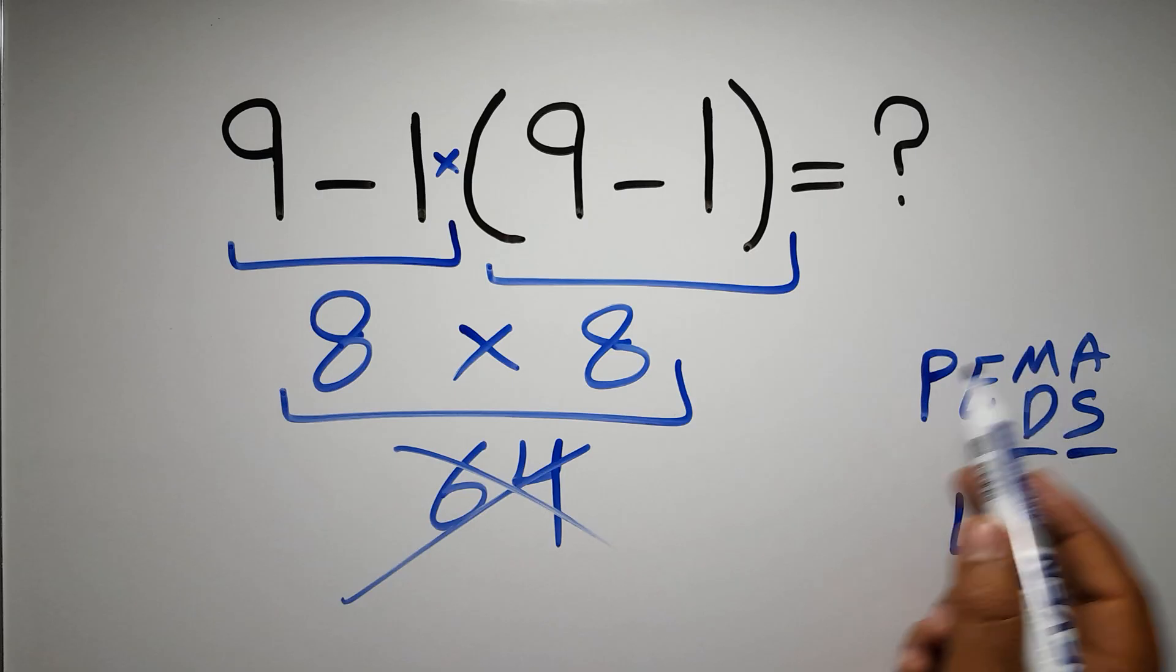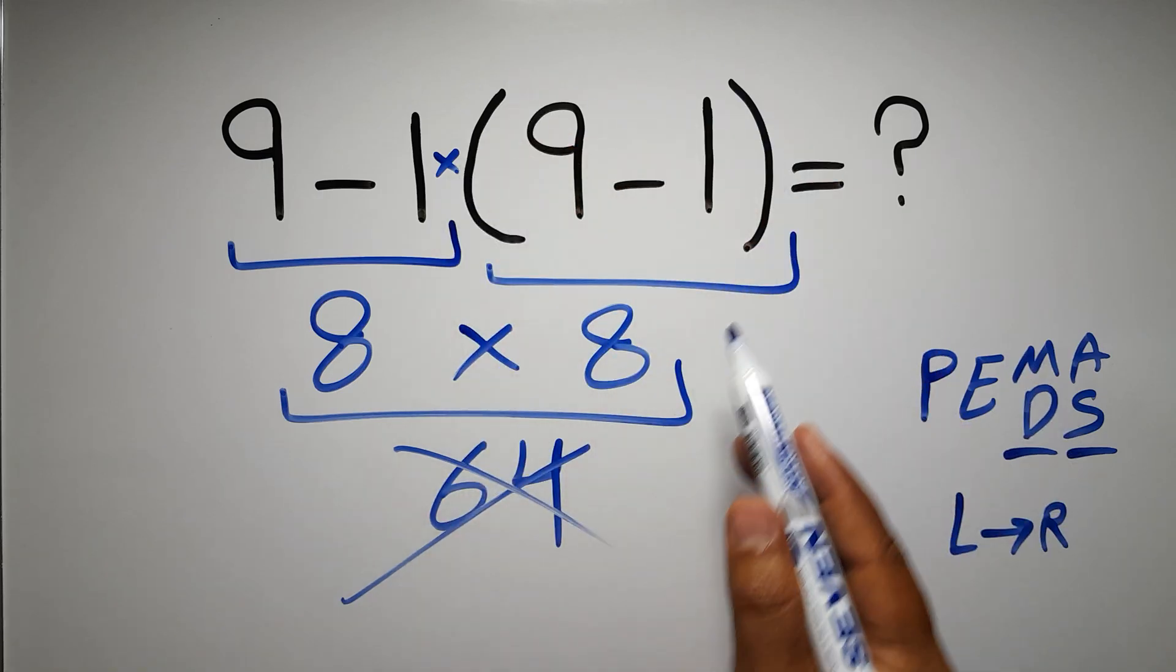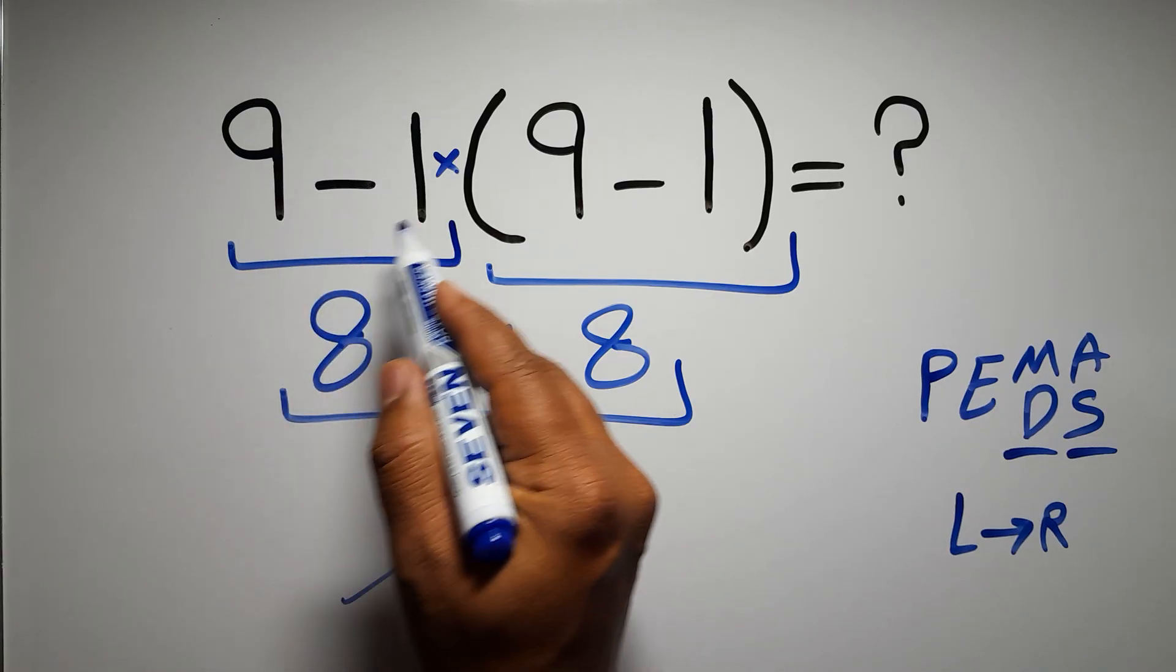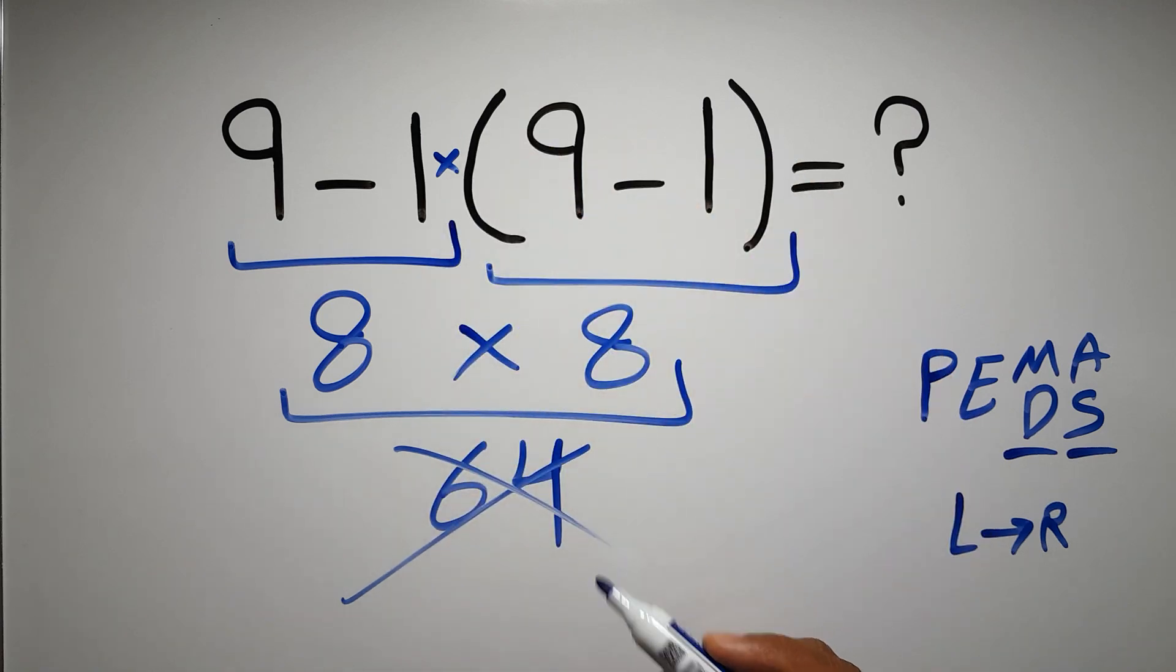Now, according to the PEMDAS, first we have to do these parentheses, then this multiplication, and finally this subtraction. If we do this subtraction before this multiplication or these parentheses, it is wrong.